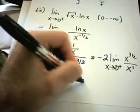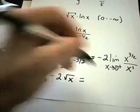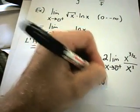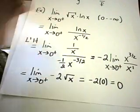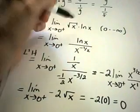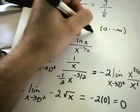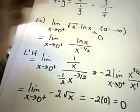And now as x approaches 0 from the right, well, square root of x is going to approach 0. So you have negative 2 times 0 or 0 as your answer.